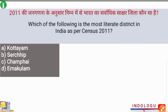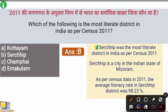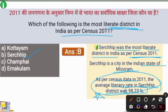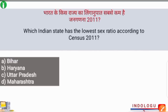Next question: which is the most literate district in India as per the census of 2011? The correct answer is option B — Serchhip. Serchhip is a district located in Mizoram. According to the 2011 census, Serchhip was the most literate district in India with an average literacy rate of 98.23%.